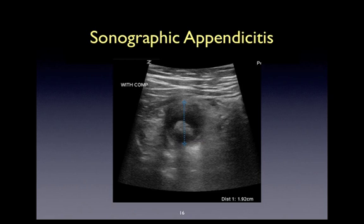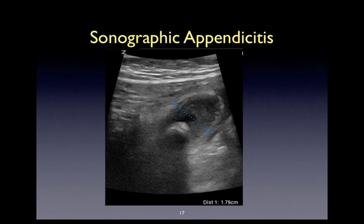This is another dramatic example of appendicitis. This appendix is measuring out at nearly 2 cm. What you can appreciate here is this golf ball-sized appendicolith, and it again maintains its structure and shape even when pressure is applied. Here's another example where you can appreciate the blind end of this appendix, again with an appendicolith noted.